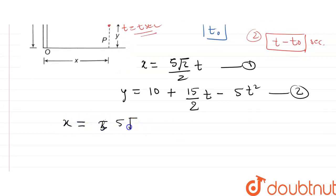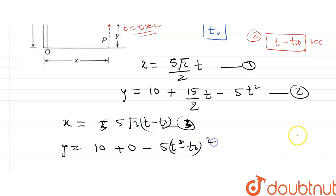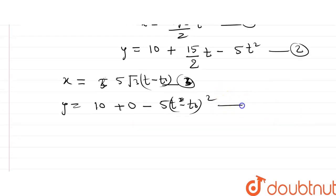Similarly for shot two: x = 5√3·(t − t0). And for y, since the vertical velocity of shot two is zero (horizontal fire): y = 10 + 0·(t − t0) − 5·(t − t0)². This gives us our third and fourth equations. Now we equate the x-parts and the y-parts.